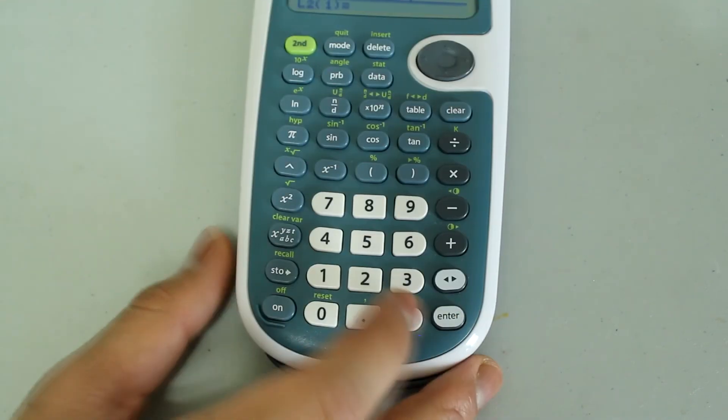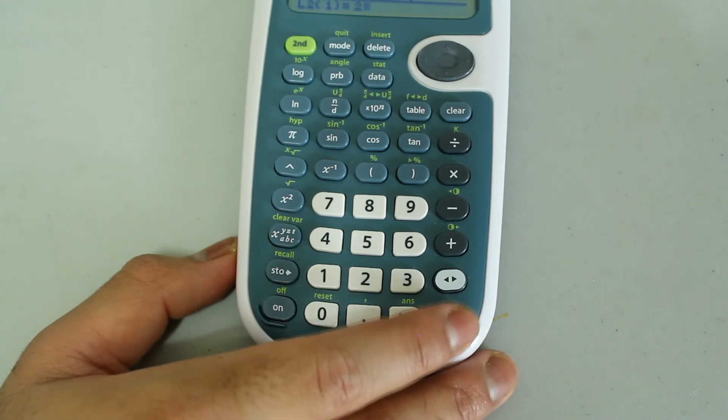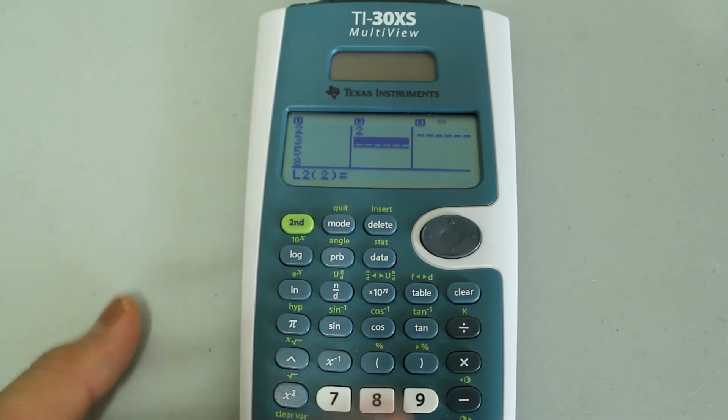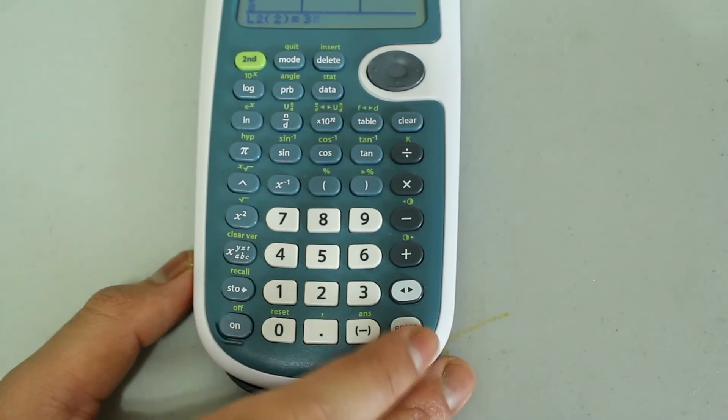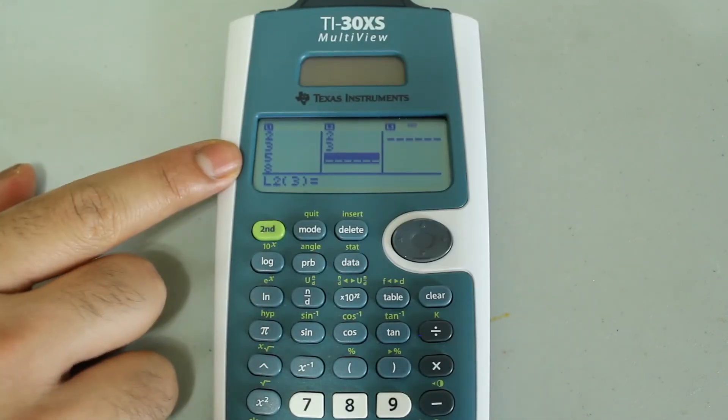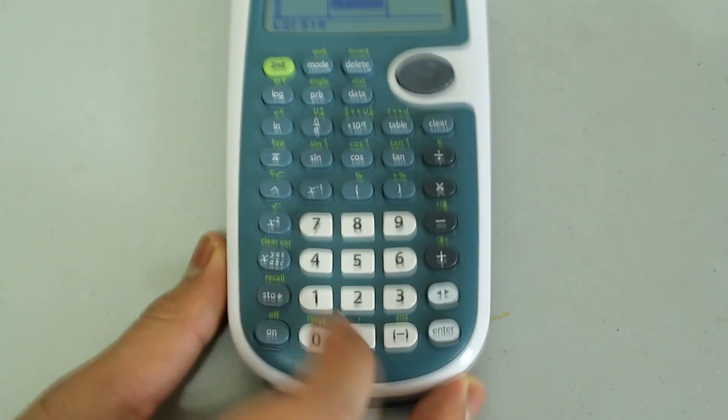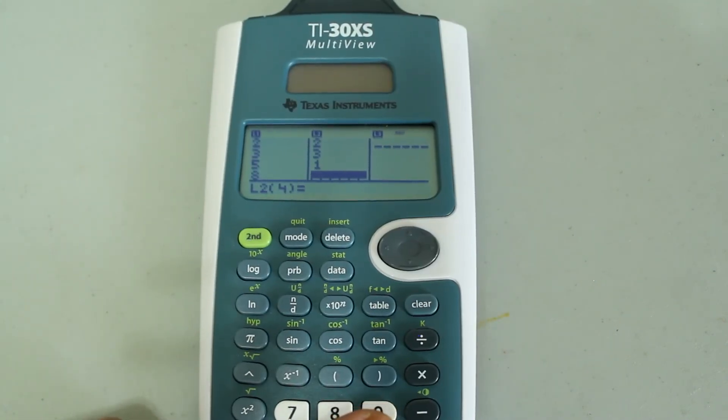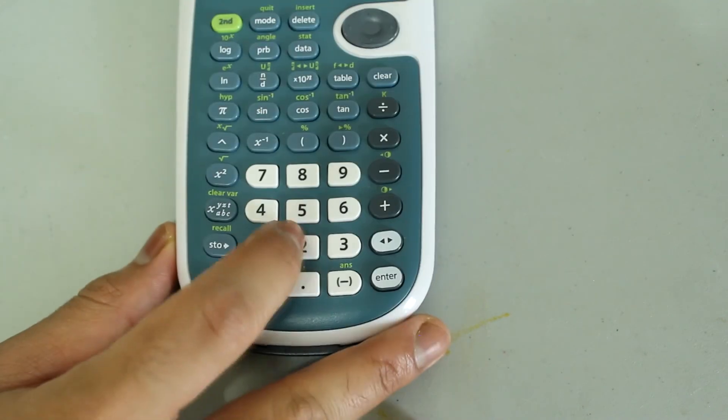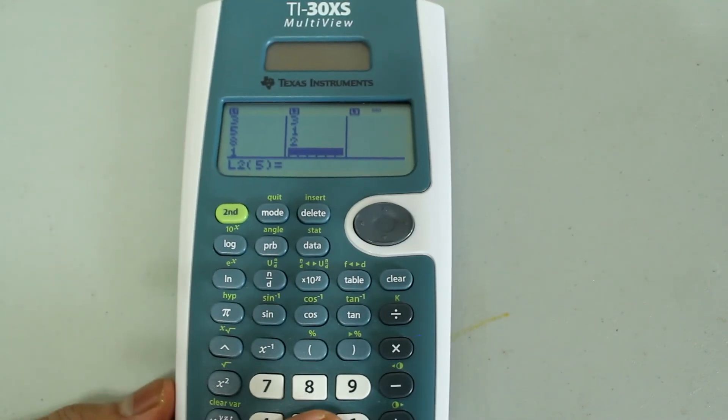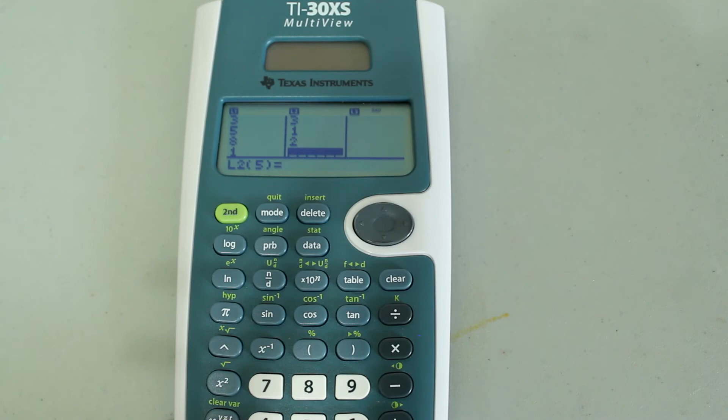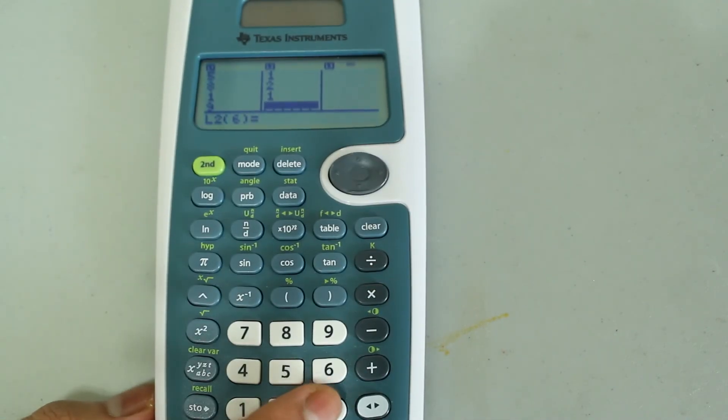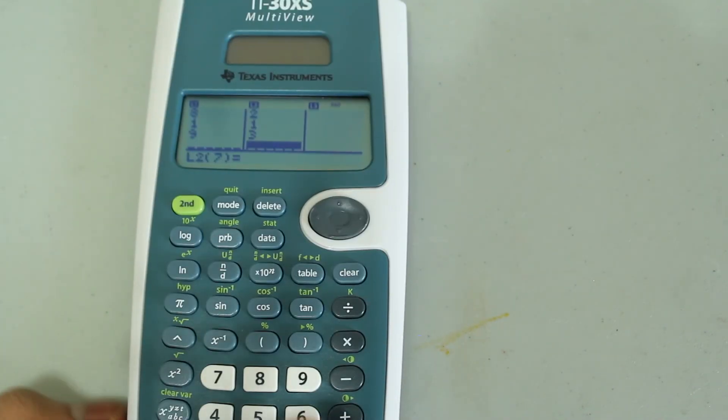So next to 2, I'm going to type in 2 because 2 appears twice. Next to 3, I'm going to type in 3 because 3 appears 3 times. Next to 5, I'm going to type in 1 because 5 only appears once. Next to 8, I'm going to type in 2 because 8 appears twice. Next to 1, I'm going to type in just 1 because 1 appears once. And next to 9, I'm going to type in 3 because 9 appears 3 times.